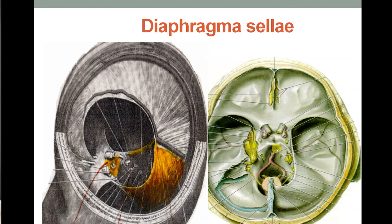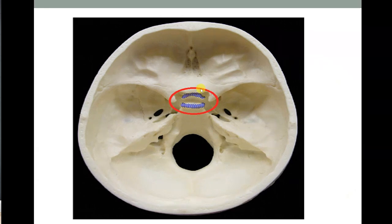The last dural fold is the diaphragma sellae. The sella turcica resembles a Turkish saddle — with the tuberculum sellae and dorsum sellae — and this is the attachment of a small circular fold of dura mater called the diaphragma sellae. At the center of the diaphragma sellae there is an aperture through which the infundibulum, or stalk of the pituitary gland, emerges. You can see the circular fold attached anteriorly to the tuberculum sellae and posteriorly to the dorsum sellae.